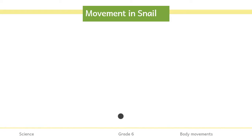Hello guys. In this section we are going to discuss about movement in animals having outer skeleton. You remember exoskeleton — the animals which have the skeleton outside the body. So let's see what is present in their body which helps them in movement.